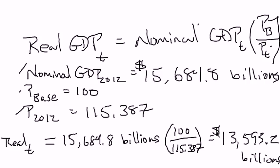The difference makes sense when you think back to the intuition behind nominal versus real GDP. Nominal GDP can change because quantities change — which is what we want to measure — or because prices change, which we don't want. So we arbitrarily used 2005 prices for computers, cars, apples, housing, and everything else to calculate real GDP in 2012, giving us $13,593.2 billion. That's the end of this video, and in the next one we'll talk about growth rates.